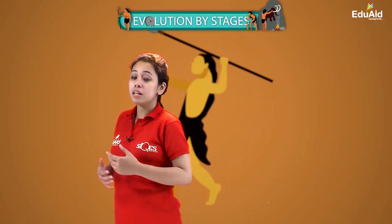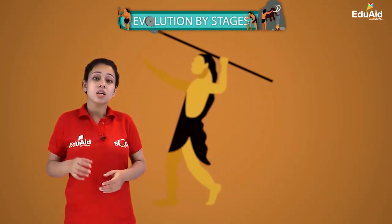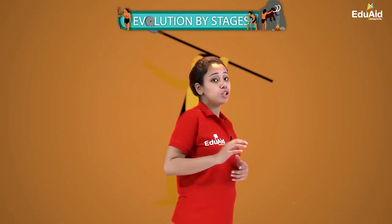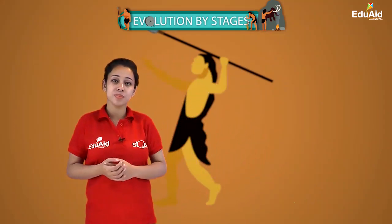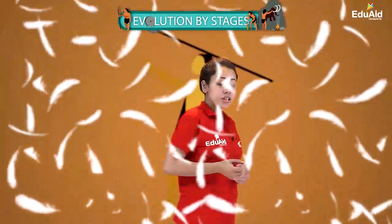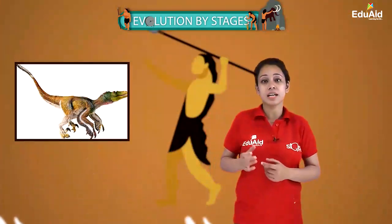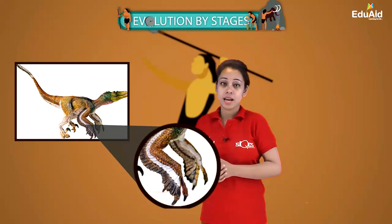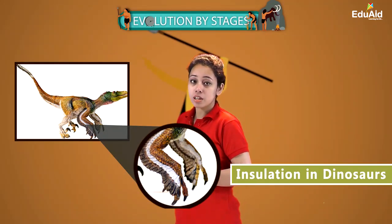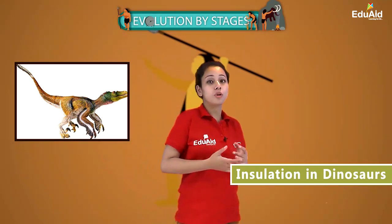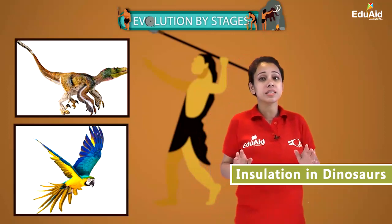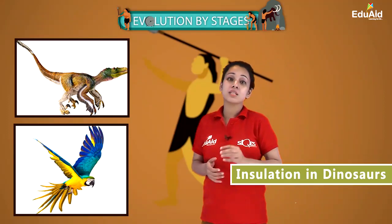Now talking about evolutionary changes — some evolutionary changes that have occurred in one group of organisms can provide a completely different function in their successive stages. Let us understand how. We have heard about feathers. Now initially, feathers were developed in the dinosaur, which is a reptile, and they served the function of insulation in cold weather. But with time, these feathers got modified, and in the case of birds, they completely served a different function — that is flight.